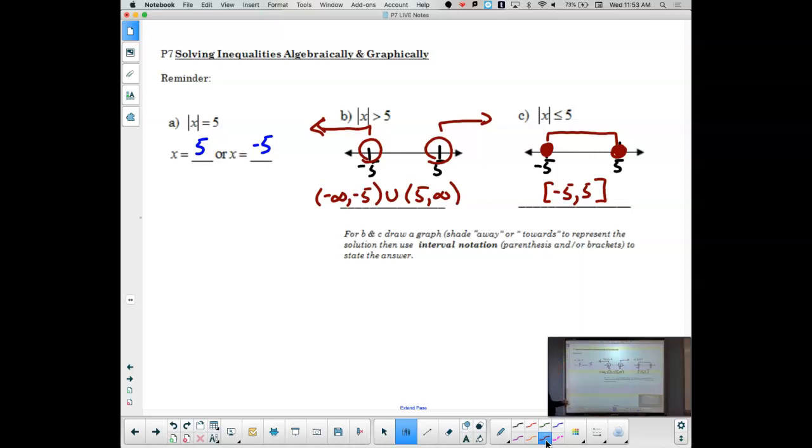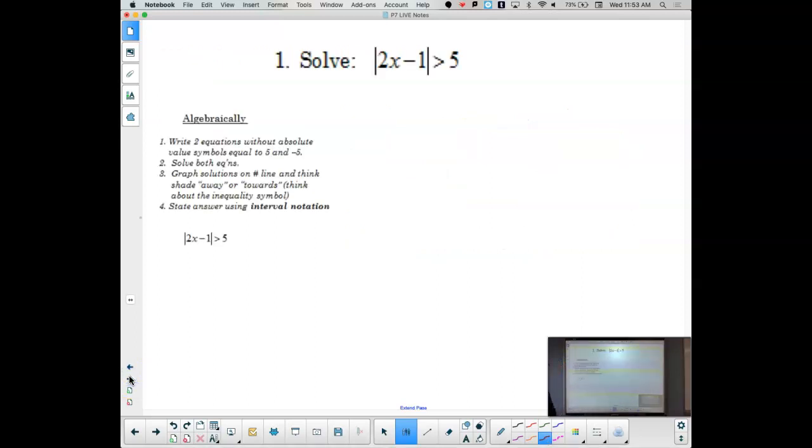Now I do have an equality part so I'm going to fill in my dot and now I want that distance to be smaller than 5 so that's going to be towards each other. Because we have the equality part we would have to switch to brackets from negative 5 to positive 5. Let's get into a little bit more with a little bit more algebraic type of one.